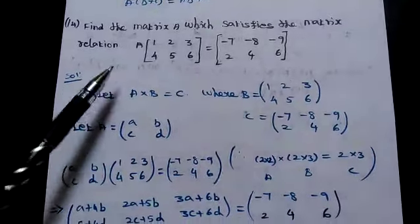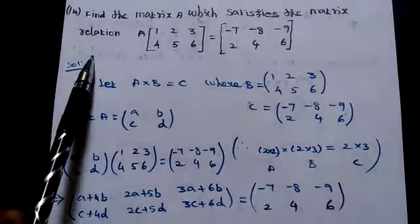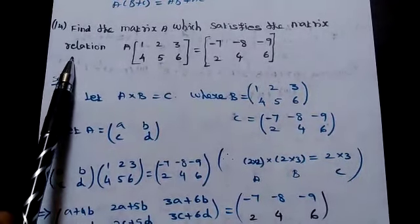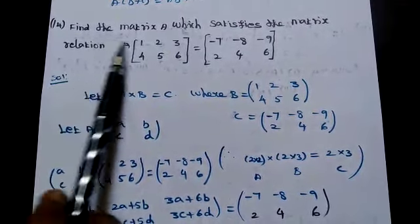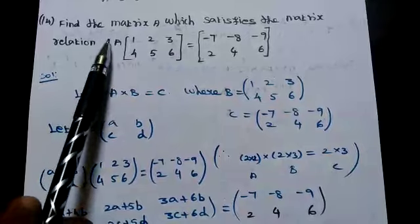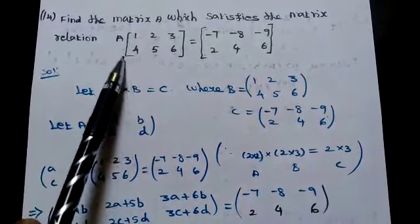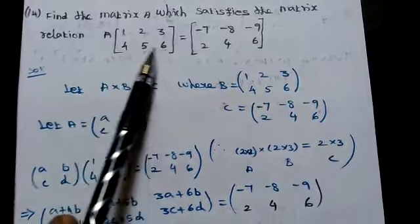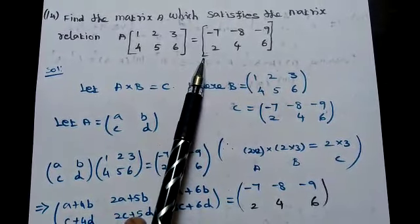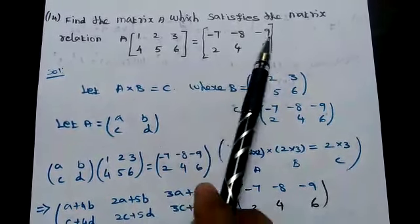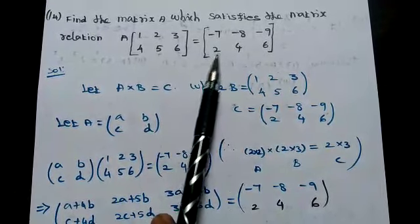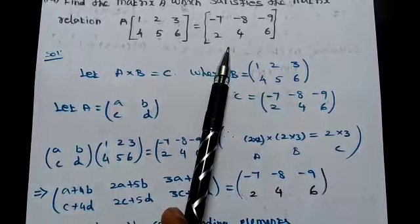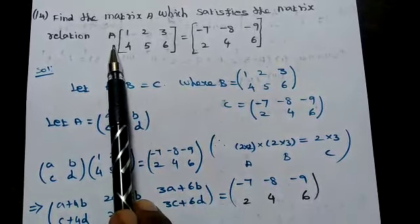Question number 14: Find the matrix A which satisfies the matrix relation. The relation is A into the matrix [[1, 2, 3], [4, 5, 6]] is equal to the matrix [[-7, -8, -9], [2, 4, 6]]. That other matrix is given, and from this relation we are going to find the value of A.